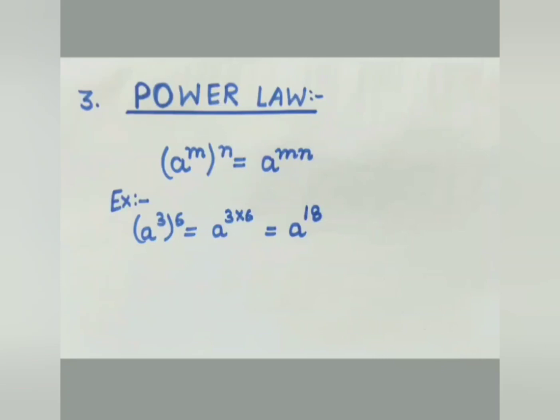Let's take an example: bracket a to the power 3, bracket close, whole to the power 6. As per our law we open the bracket and get a to the power 18. How? We assume the power 3 is m and the power 6 is n, so m into n is 3 into 6 equals 18 — giving us a to the power 18.